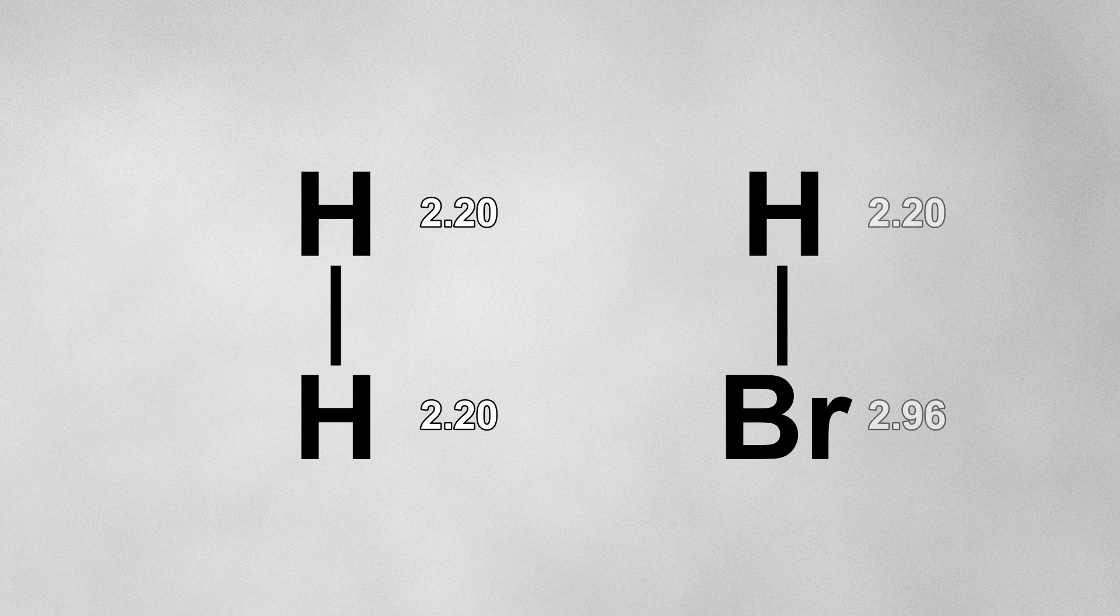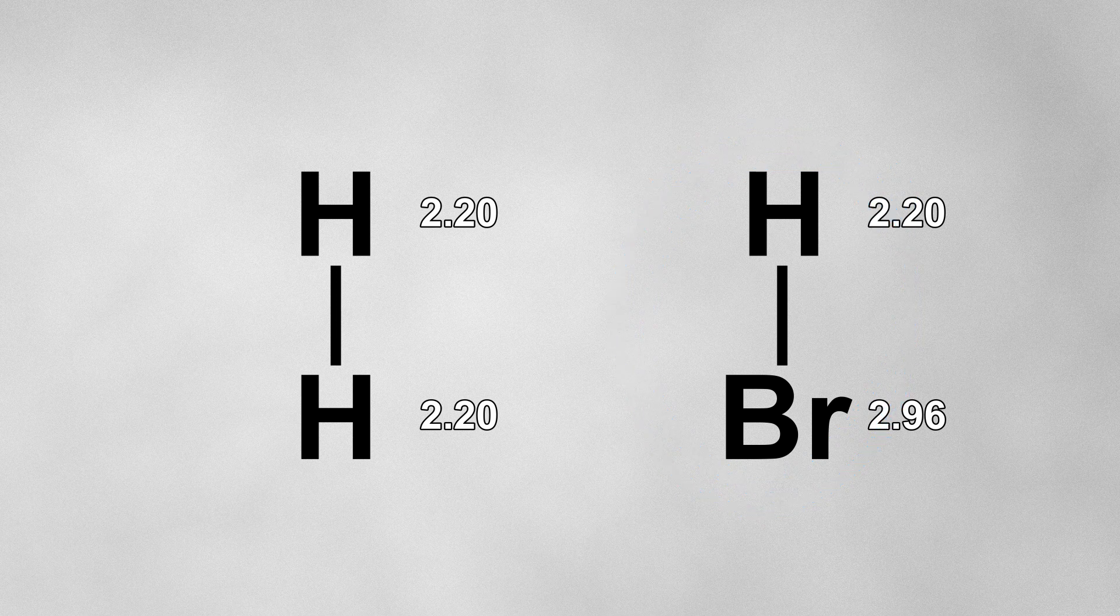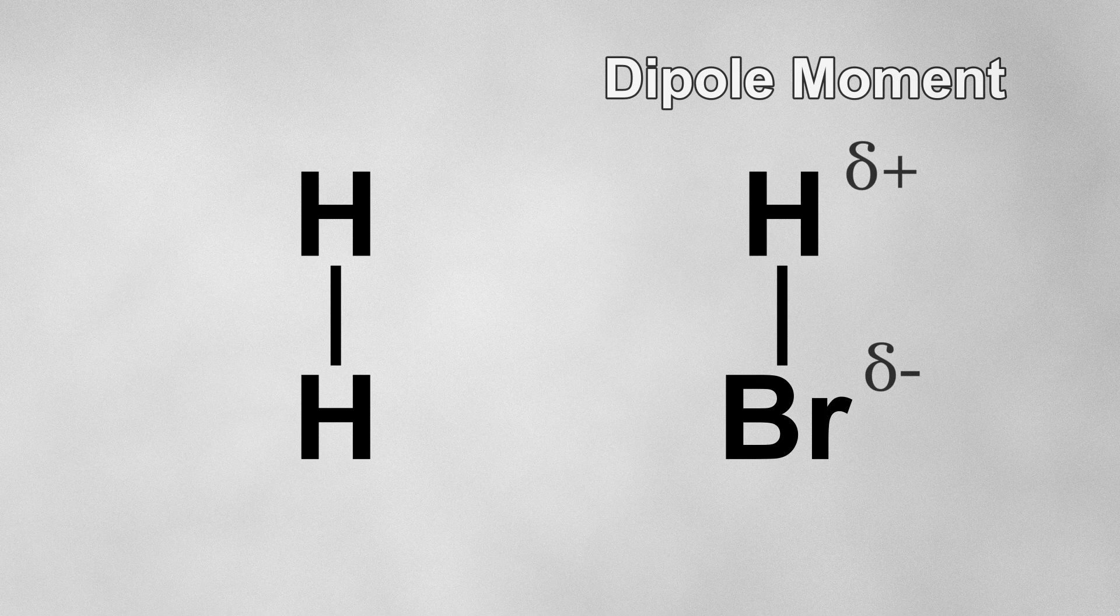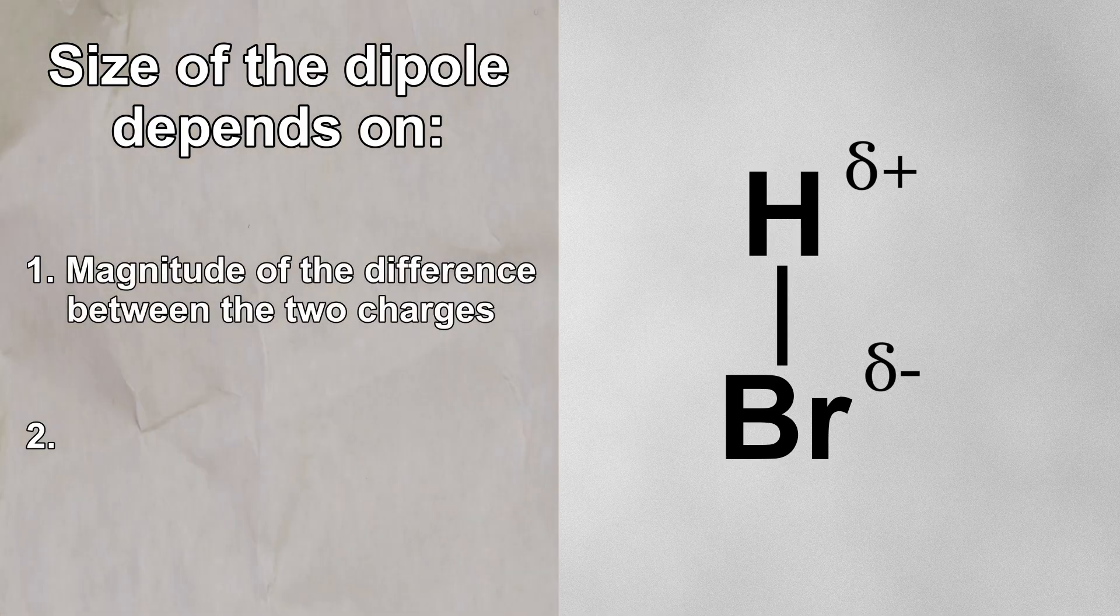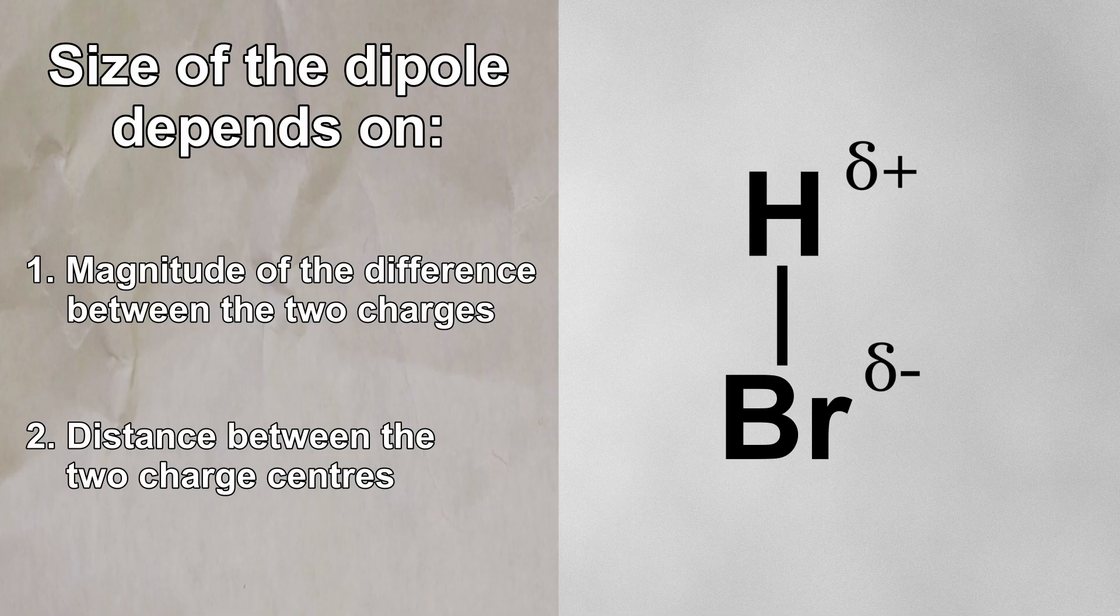However, bromine is more electronegative than hydrogen, so in hydrogen bromide, the electrons in the bond will be pulled closer to the bromine atom. This leaves us with what's known as a dipole moment across the bond. The size of the dipole depends on two things, the magnitude of the difference between the two charges, and the distance between the two charge centers.